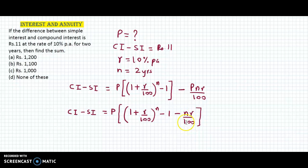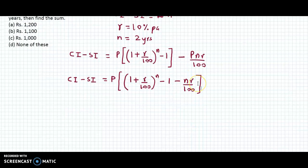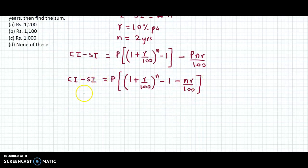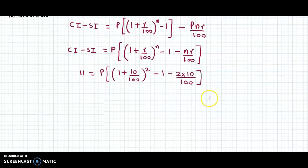Now we substitute all these values. The difference here is rupees 11, so 11 equals P into (1 plus 10 by 100) raised to 2 minus 1, minus 2 into 10 by 100. Let us simplify and see what we get.